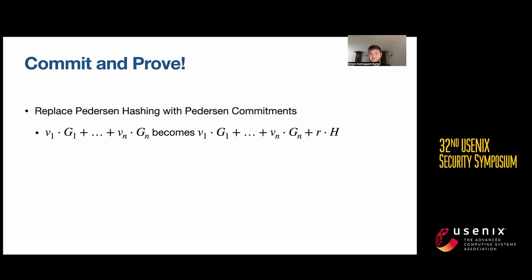The way we avoid computing the hashes inside the circuit is to exploit the structure of commit and prove. We replace Pedersen hashing with Pedersen commitments, which just means we add a generator for randomizing the Pedersen hashing hashes, so they become Pedersen commitments. The prover will give all of the commitments on the path to that leaf to the verifier.